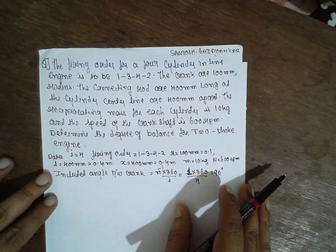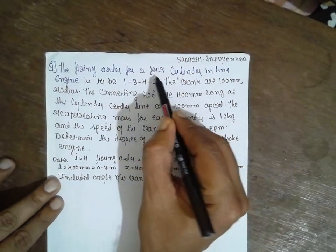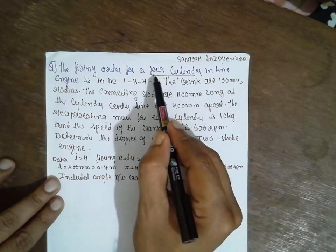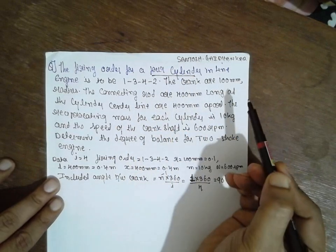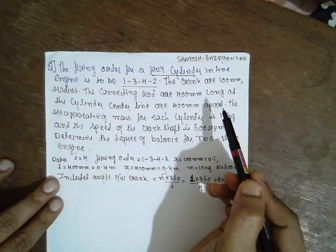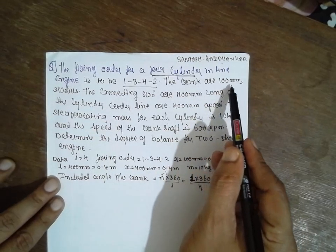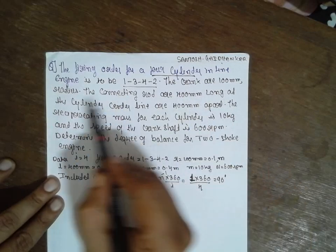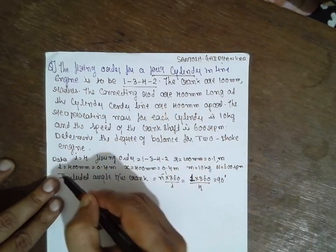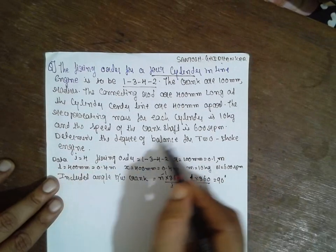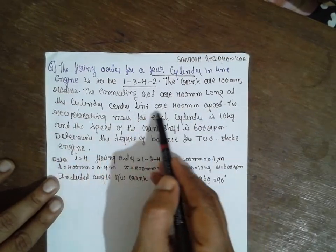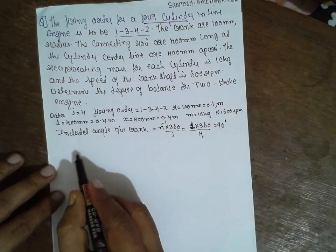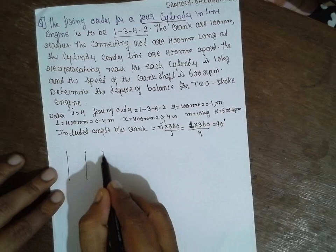I am Sandosh Gayadankar. Today's concept is about balancing of reciprocating masses, and we are discussing a four-cylinder engine. The firing order is 1-3-4-2. The crank radius is 100 mm, so R equals 0.1 m. The connecting rod is 400 mm long, so L equals 0.4 m. The cylinder centers are 400 mm apart, meaning there are four cylinders spaced 400 mm apart.